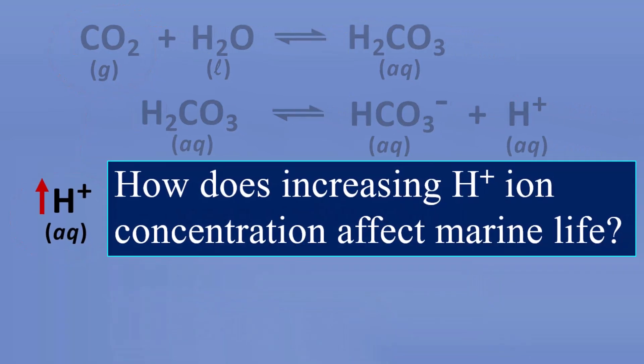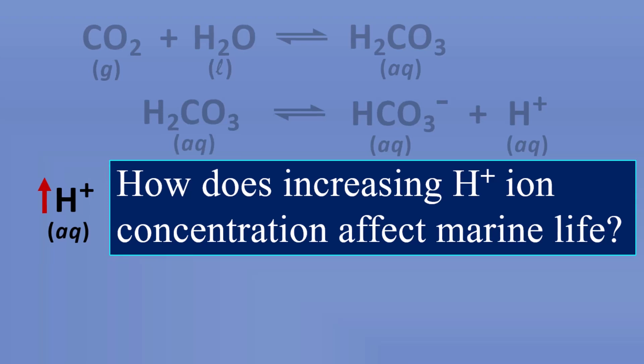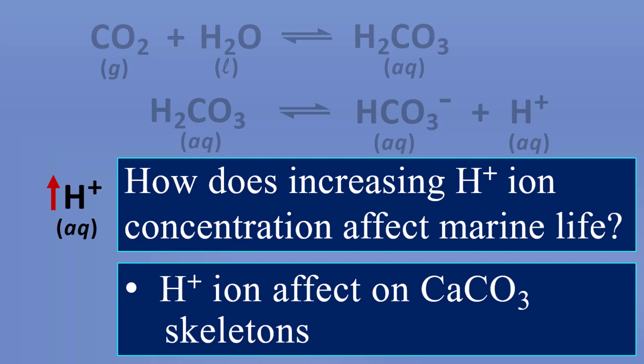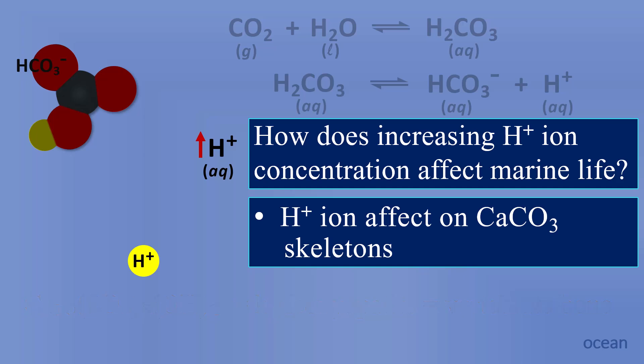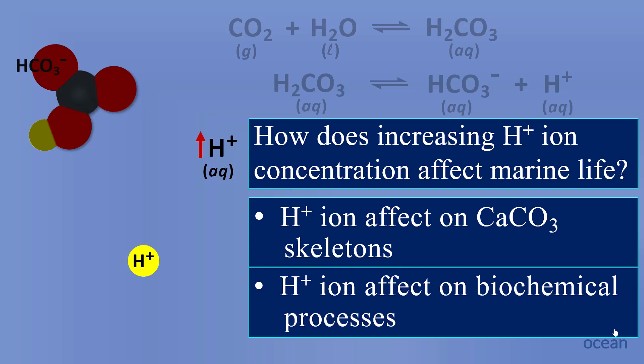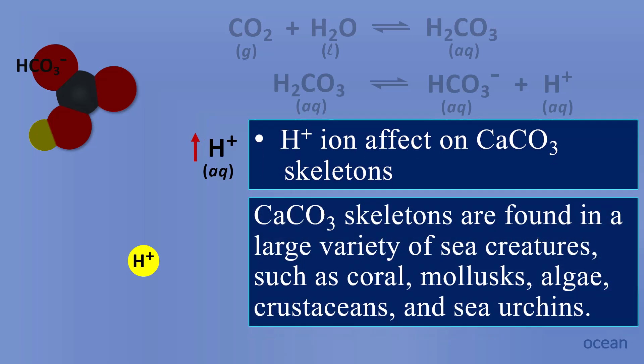So how does increasing hydrogen ion concentration affect marine life? We're going to look at hydrogen ion effects on calcium carbonate skeletons. In animal life, there are two main skeletal compounds: calcium phosphate (hydroxyapatite) for vertebrates, and calcium carbonate CaCO₃, which is the major skeletal compound in marine life. We will also look at hydrogen ion effects on biochemical processes.